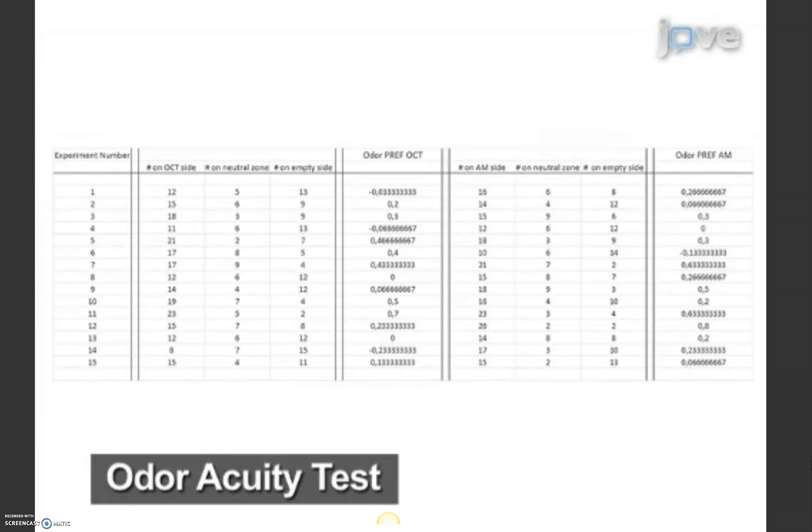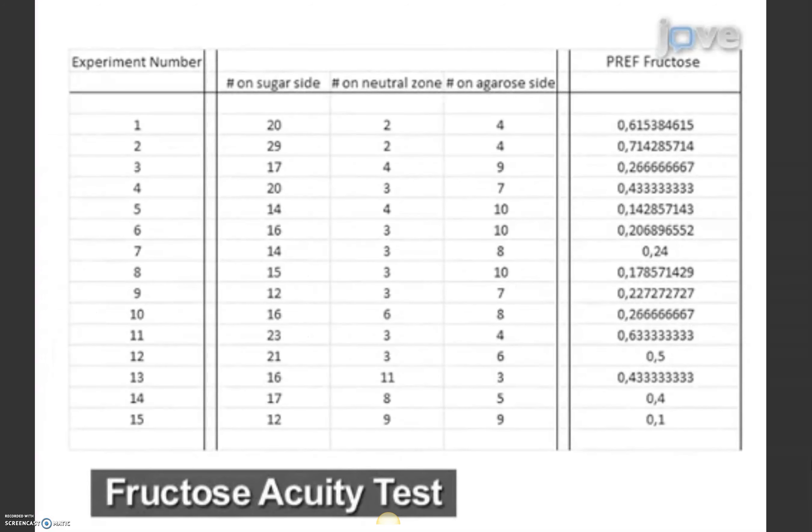Because the larvae tested were transgenic, a choice between a filled odor container and air was also offered, as well as a choice between pure agarose and agarose plus sugar.